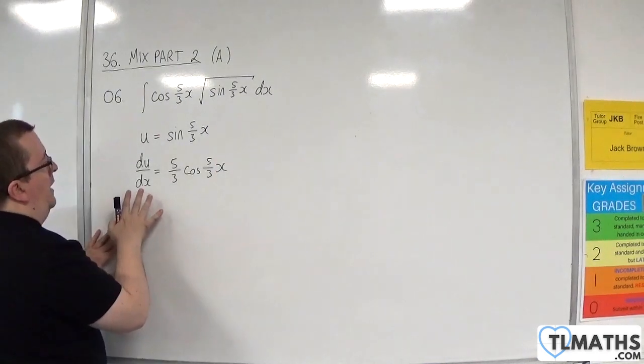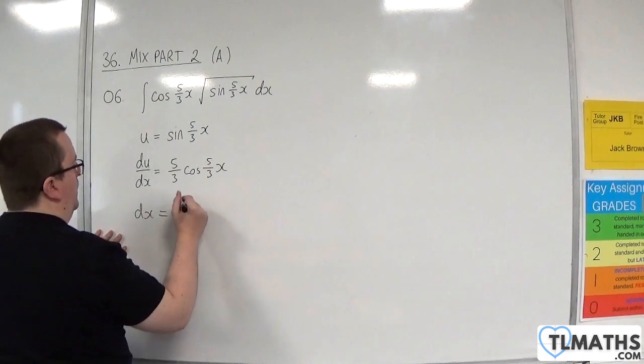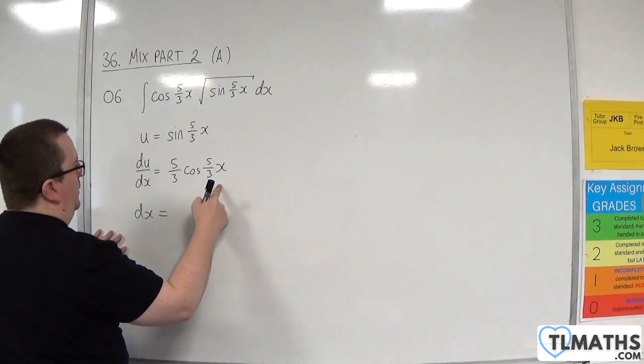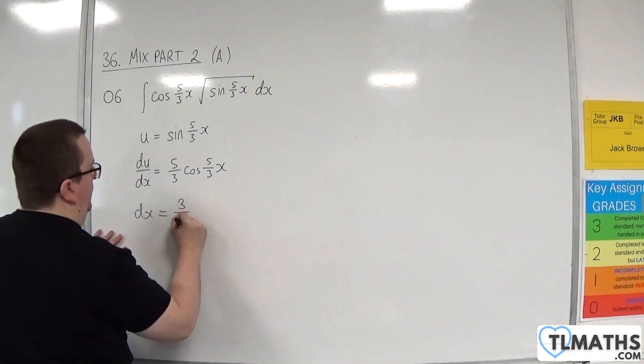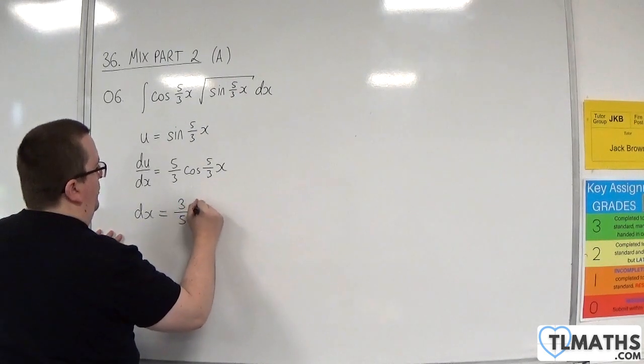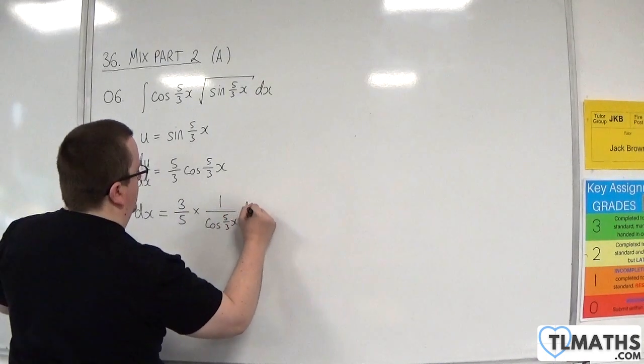So we're going to have du/dx equals 5 thirds cosine of 5 thirds x. And then rearrange to get dx. So dx will be equal to, it's 1 over this times by du.